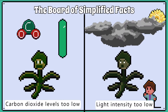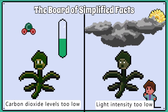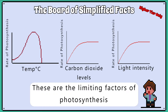If carbon dioxide levels are too low, then that will reduce the rate of photosynthesis, as will light intensity. We call these the limiting factors of photosynthesis. All three things can limit how much photosynthesis a plant can do.